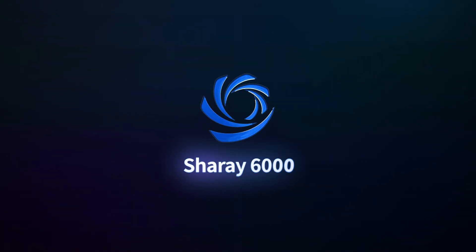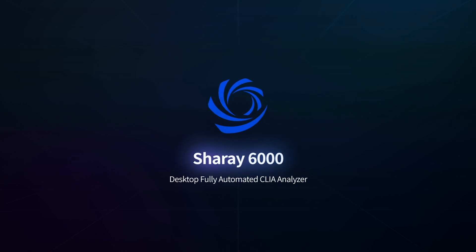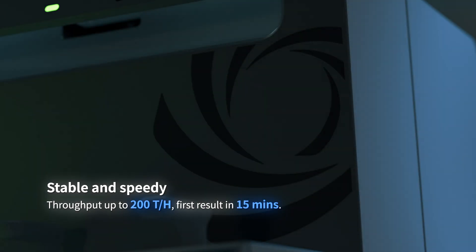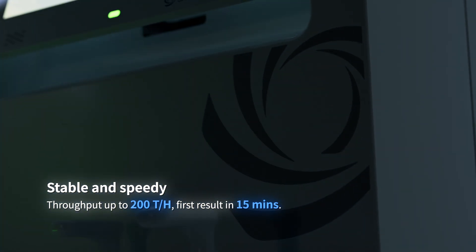Shurei 6000, Desktop Fully Automated Chemiluminescence Immunoassay Analyzer. Stable and speedy, with throughput up to 200 tests per hour and the first result available in only 15 minutes.